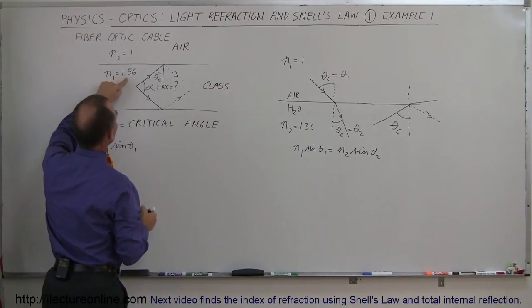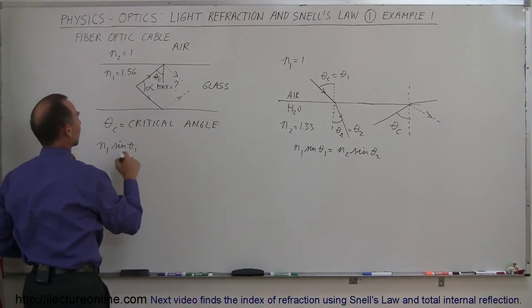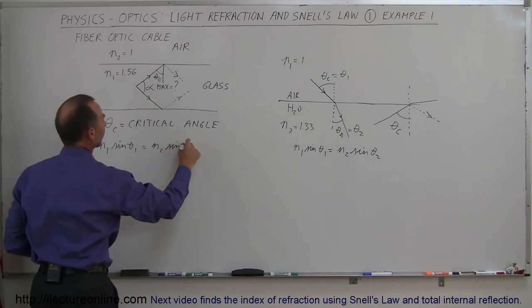Index of refraction for glass, 1.56. For air, one. And so it's n1 sine of theta1 equals n2 sine of theta2.